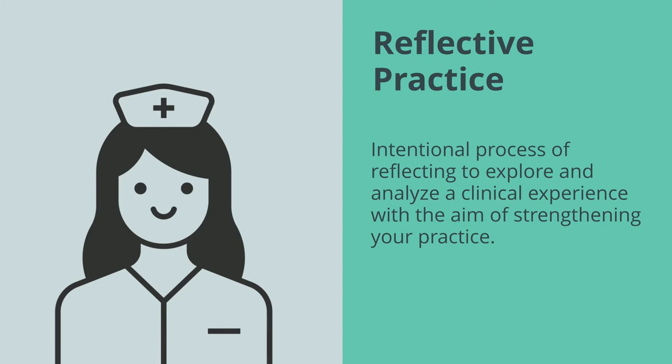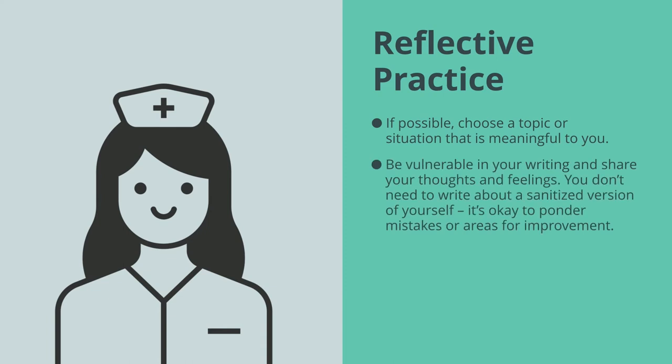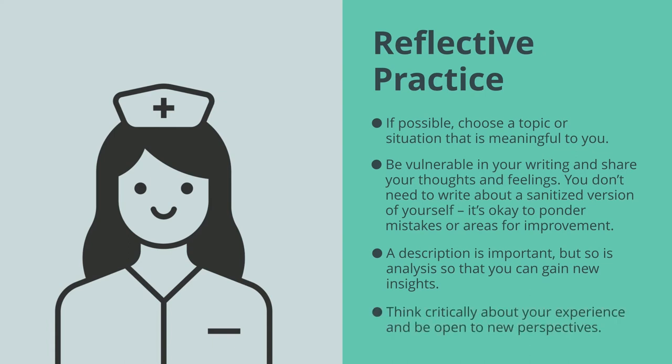So how do you write this type of paper? Let's start with some general tips. If possible, choose a topic or situation that is meaningful to you. Be vulnerable in your writing and share your thoughts and feelings. You don't need to write about a sanitized version of yourself. It's okay to ponder mistakes or areas for improvement. A description is important, but so is analysis so that you can gain new insights. Think critically about your experience and be open to new perspectives.